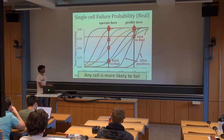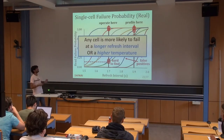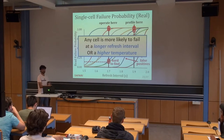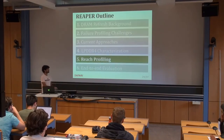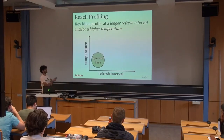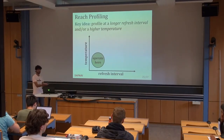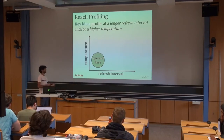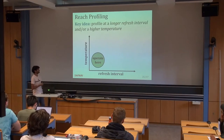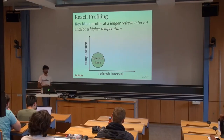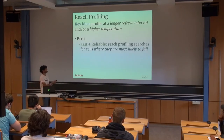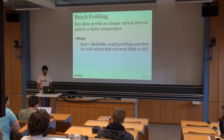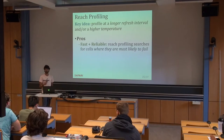This leads us into the profiling mechanism we're proposing. The key idea is that any cell is more likely to fail at a longer refresh interval and/or a higher temperature, and we want to take advantage of this. We call this Reach Profiling — profiling at conditions more aggressive in temperature and/or refresh interval than what we're operating at, so we're searching for cells where they are most likely to fail. The pros are that it's fast and reliable because cells are easy to discover. The downside is that we have some false positives — the profiler might identify cells failing at profiling conditions that we'll never see fail under actual runtime operations.